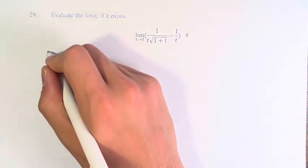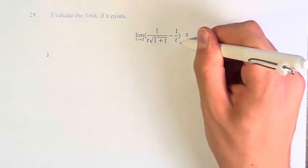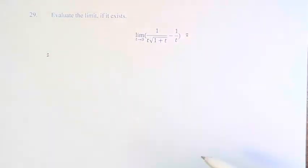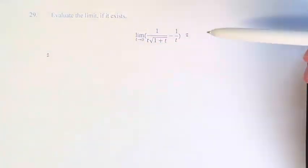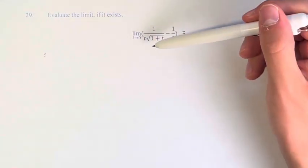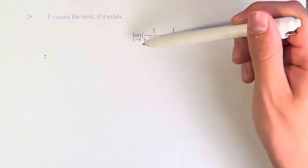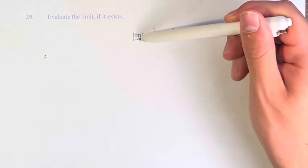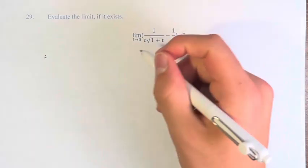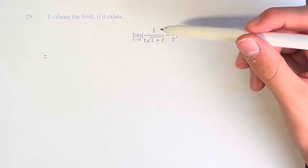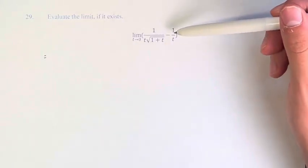What we have to do here is subtract these fractions, turn them into one fraction, and then simplify it so that we don't have any t's in the denominators where we'd be dividing by 0 when we're plugging in 0 for t. To combine these two fractions, they need to have the same denominator.